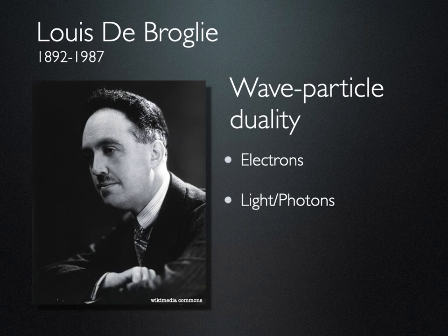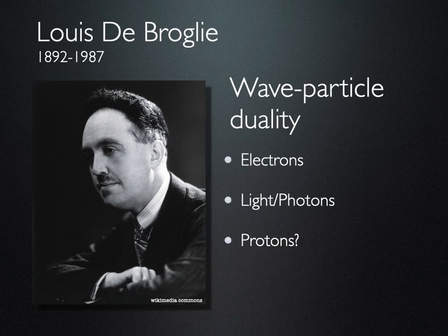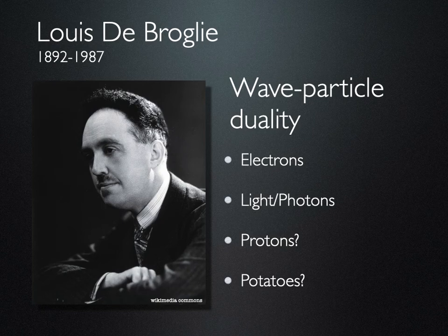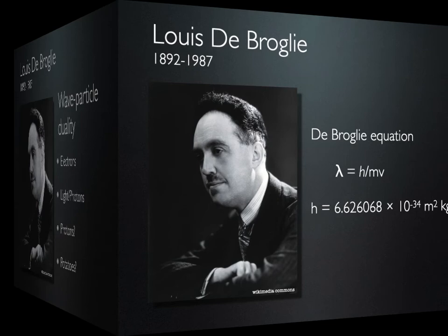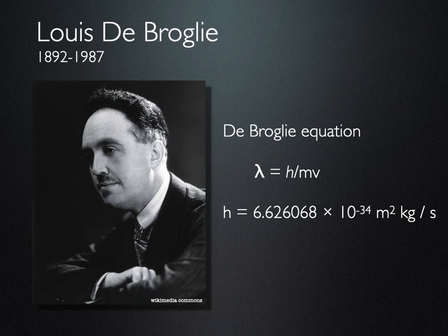So we might wonder about other small particles we have already talked about — protons, neutrons, quarks — do they exhibit this wave-particle duality? And what about potatoes, pickup trucks, planets, or solar systems? Is wave-particle duality only a feature of small things, or is it somehow a feature of all things? The de Broglie equation gives us a way to convert between the wave properties of a thing and the particle properties of a thing.